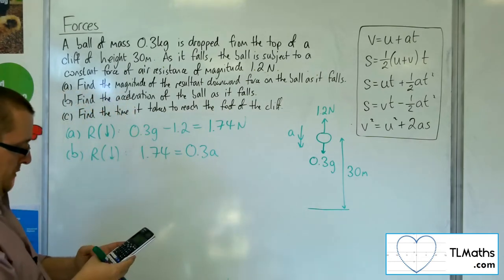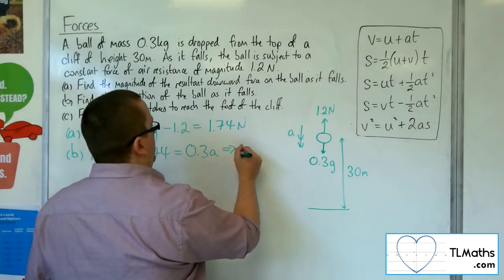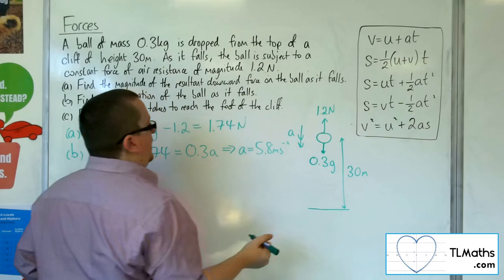So if I do 1.74 divided by 0.3, I get 5.8. So a is 5.8 meters per second per second.